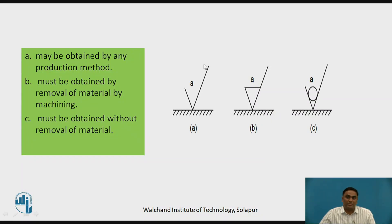There are three symbols in the next slide. Symbol A indicates the roughness value — that is the RA value — which can be obtained by any production method. It may be casting, machining, or a finishing process.